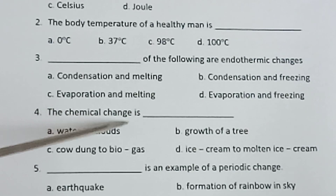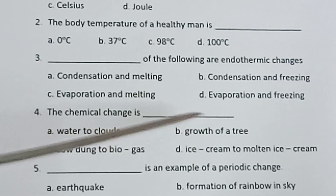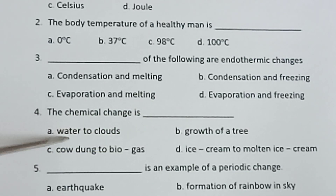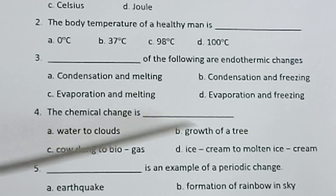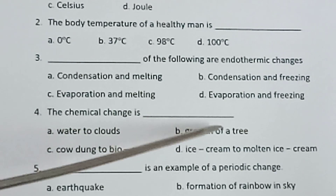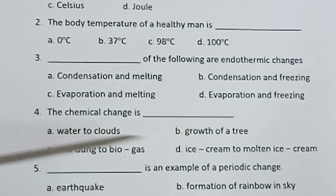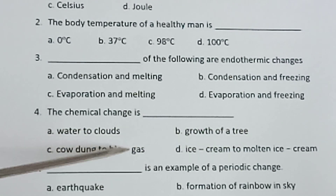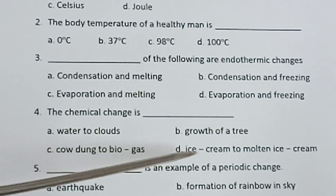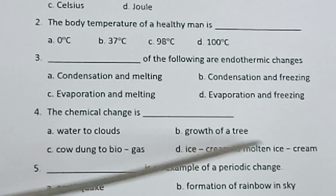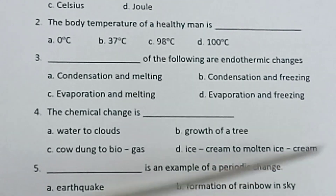Fourth one: Which of the following are chemical changes? — Water to clouds, Growth of a tree, Cow dung to biogas, Ice cream to molten ice cream.